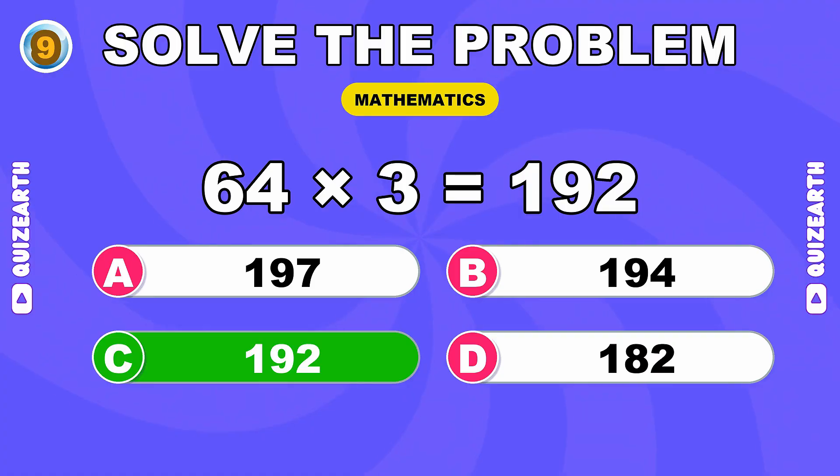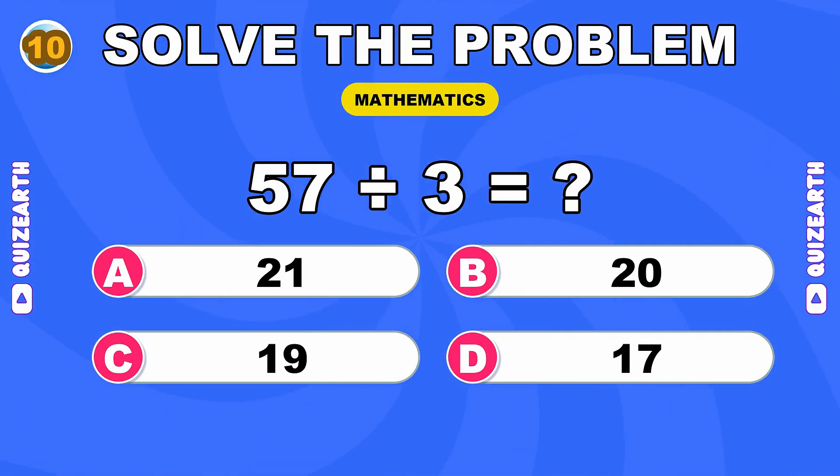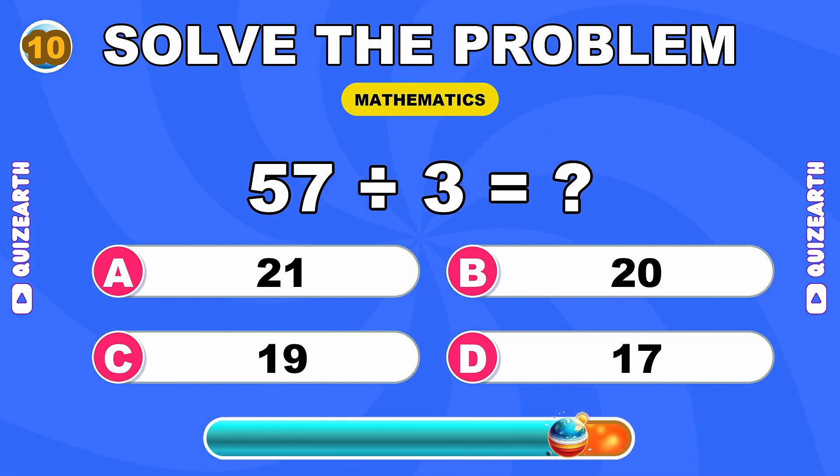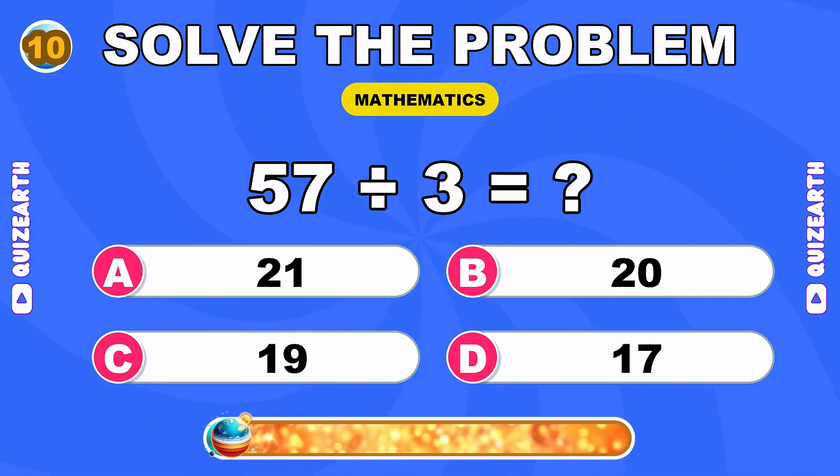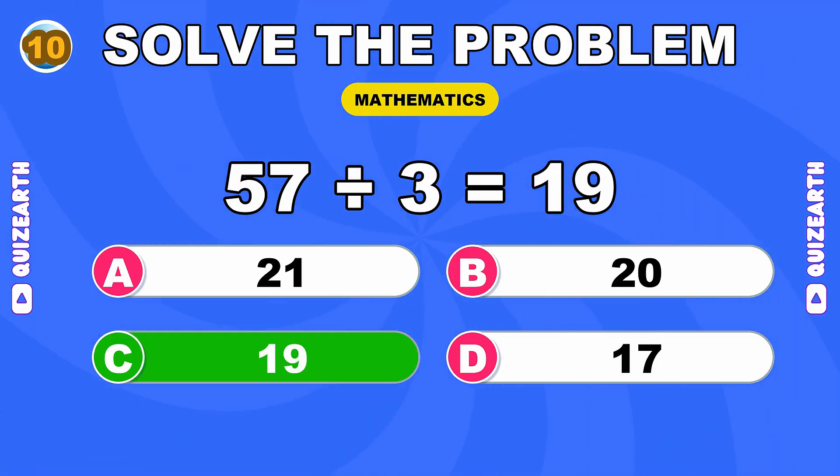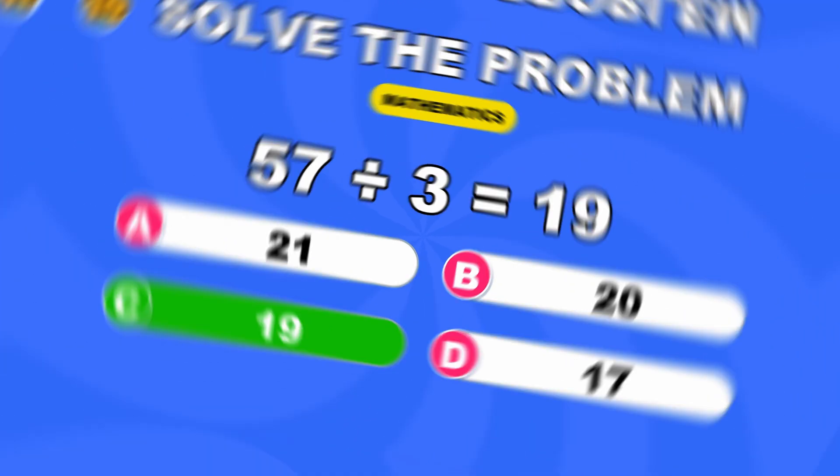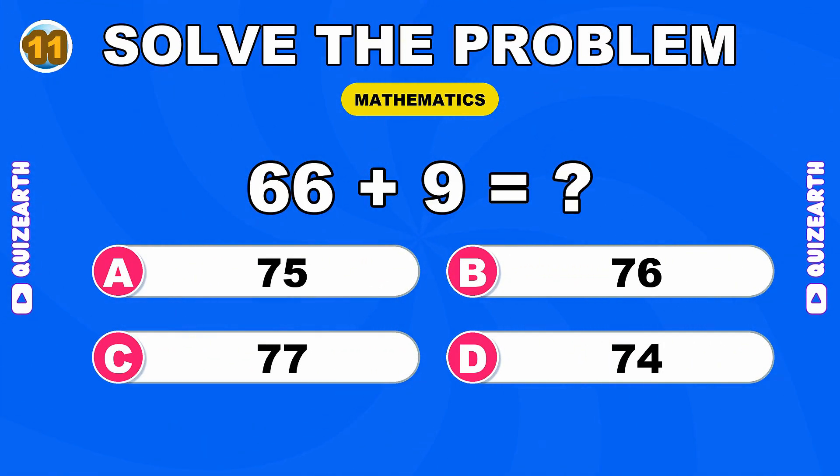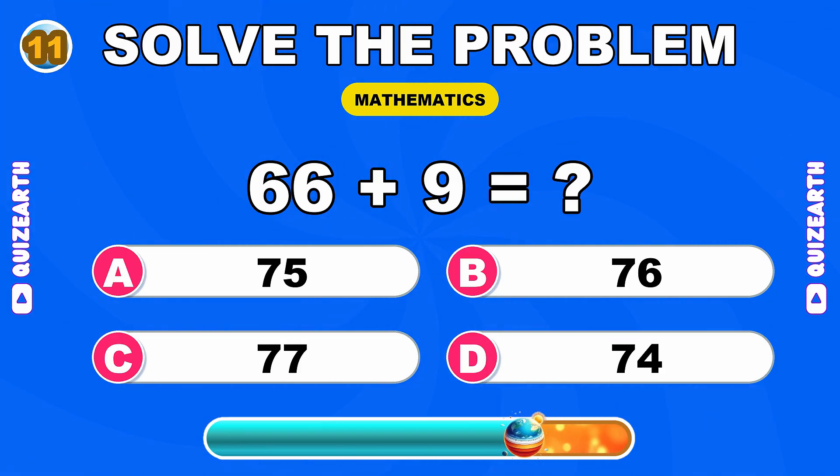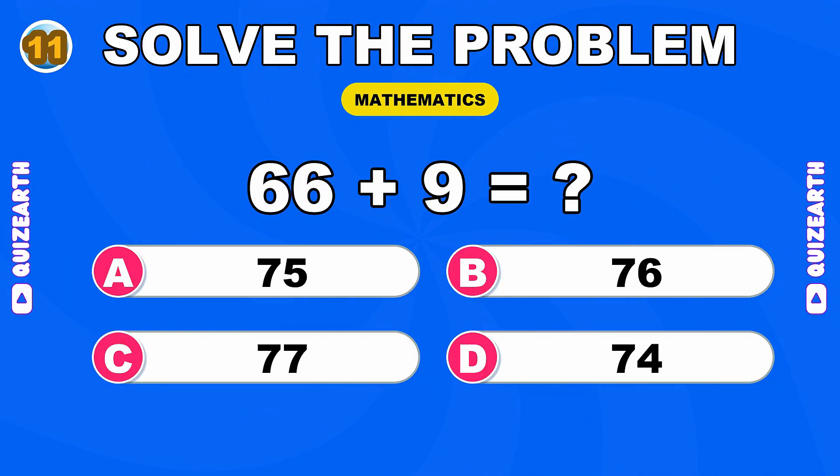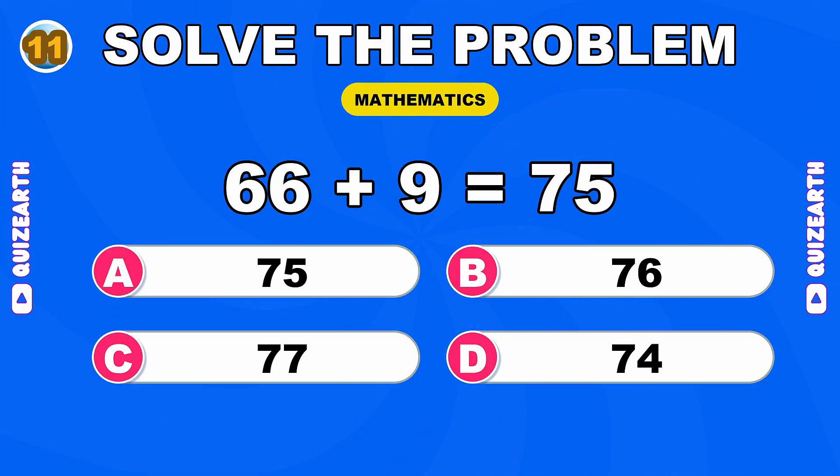Classic, 28. What do you get when you multiply 64 by 3? Too easy for you, 192. What is 57 divided by 3? Impressive, 19. How much is 66 plus 9?